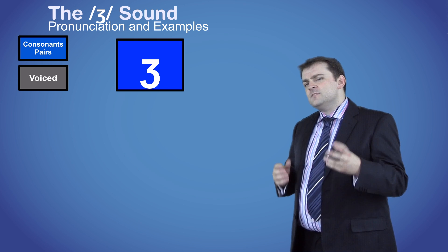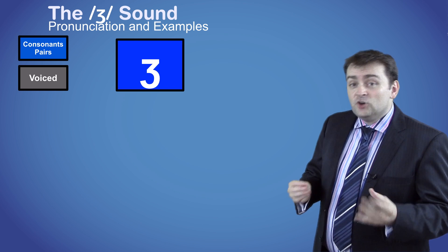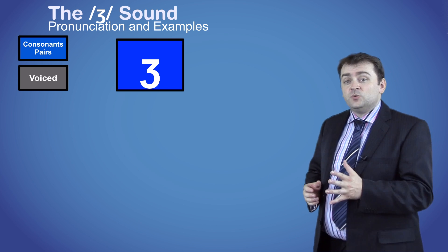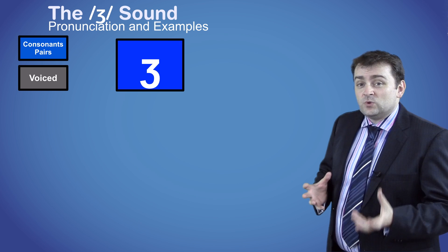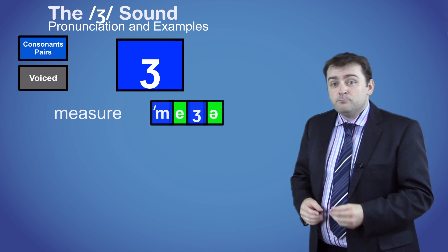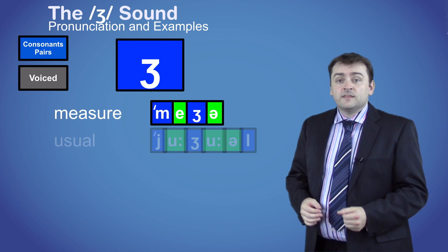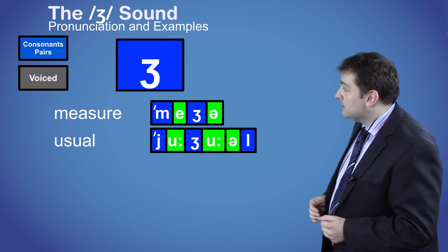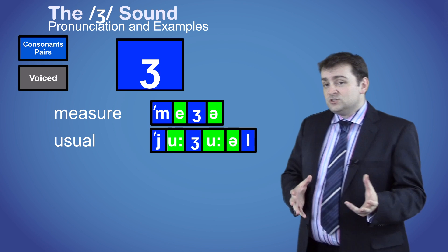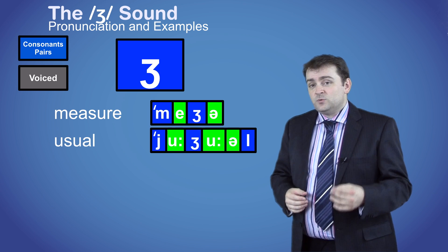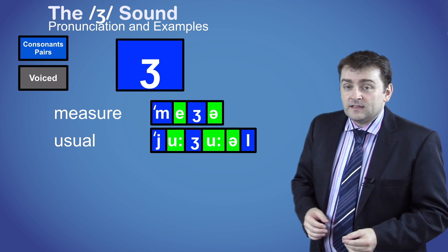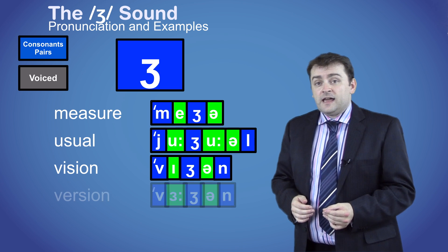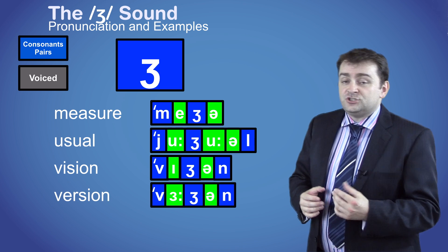The zh sound is normally spelled with the letters SU, as in the words measure, usual, and visual. But it can also be spelled with the letters SI, as in the words vision and version.